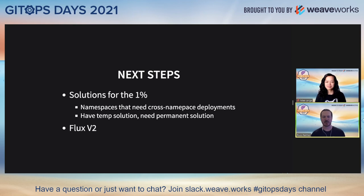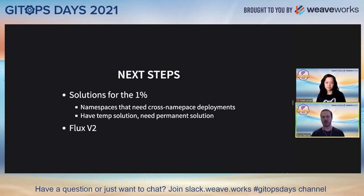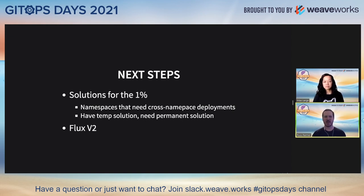That brings us to next steps. We solved for 99%, and what we're looking at now are solutions for the 1%. Namespace-scoped Flux is specifically designed to be scoped to the namespace and cannot deploy outside of it for security reasons. That 1% needs actual cross-namespace deployment capabilities. Luckily those teams already have a temporary solution in place, but we need to find a more permanent solution for them and any future use cases needing this functionality. We're actively looking into Flux V2 and getting familiar with all the different features it has to offer — new controller setups, new multi-tenancy configs — trying to figure out how that fits into our current structure, as it seems to be more multi-tenant native.